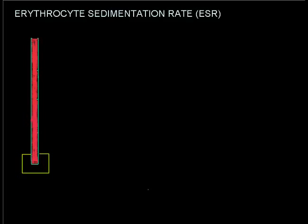Today we would like to have a good look at erythrocyte sedimentation rate. Looking at the term, we can see we're dealing with erythrocytes — which are essentially red blood cells — sedimentation, which is a term for how particles in a solution settle out into different layers, and lastly a rate. In this case we're looking at a distance measured in millimeters over a period of one hour.